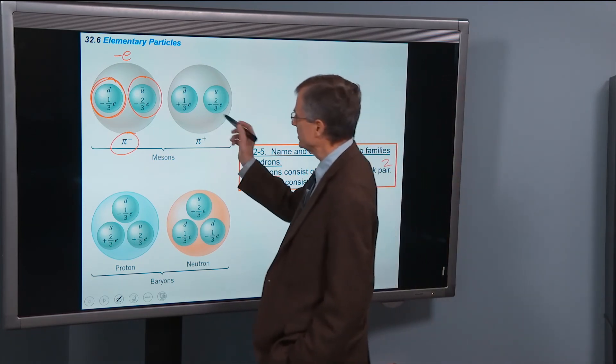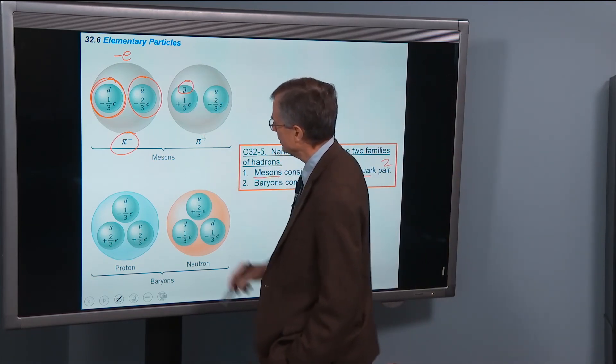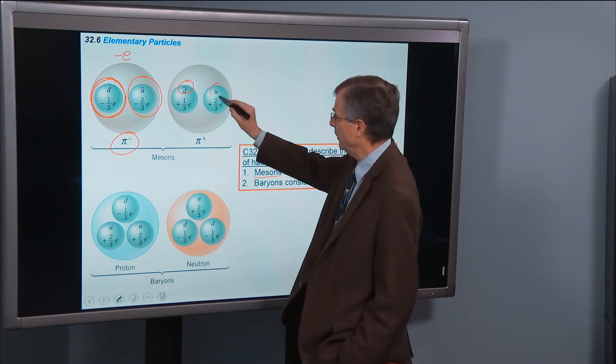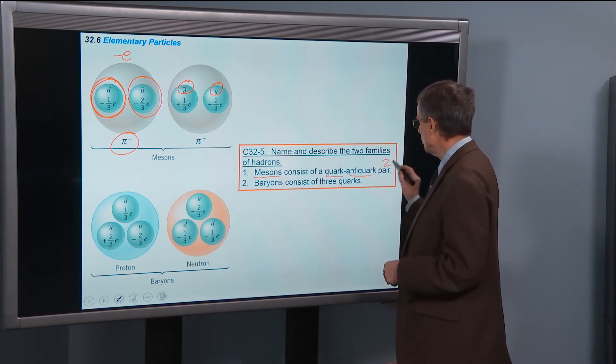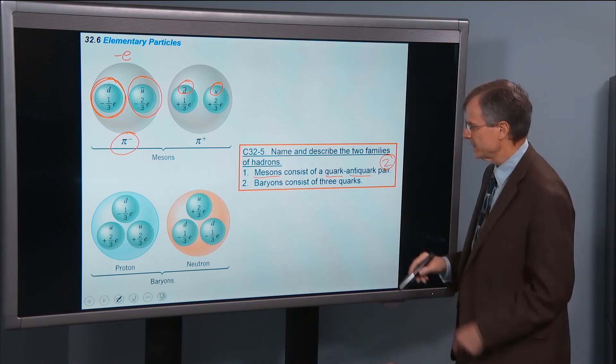Pi-plus-meson is just the opposite, has an anti-down and an up quark. But again, it's a meson. So it has only two quarks, a quark and an anti-quark pair.